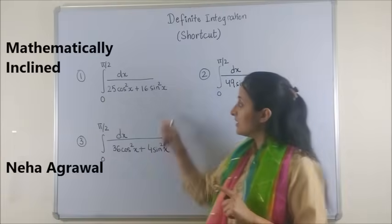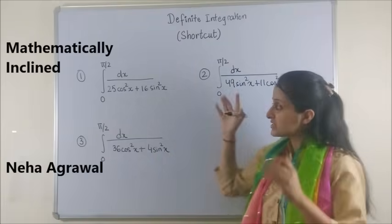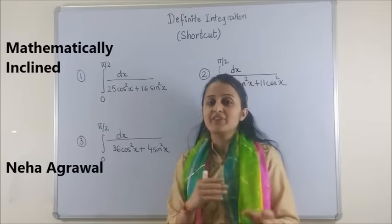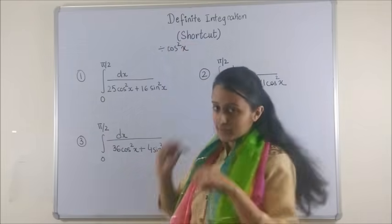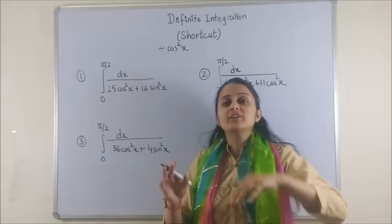Hi everyone, remember these kinds of questions where you would always divide your numerator and denominator with cos square x, then put tan x as t